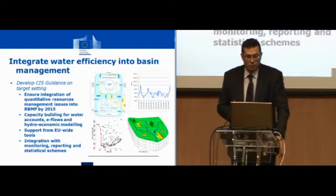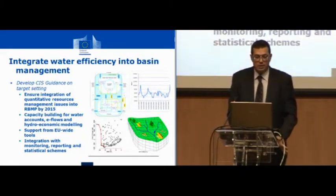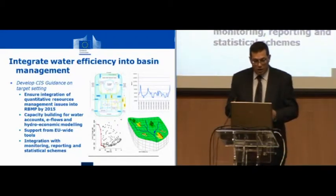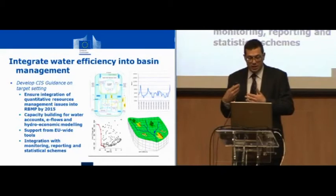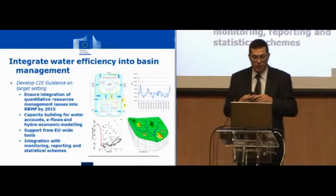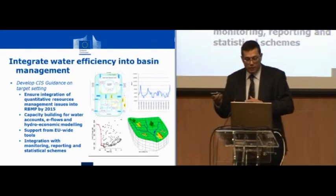The second element of the blueprint with regard to water efficiency is the better integration of water efficiency into river basin management. The tool selected in the context of the blueprint is to develop guidance on water balance, e-flows, and target setting in the context of the common implementation strategy. The objective is to ensure better integration of quantitative resource management issues into the next river basin management plans. This will also be a process for capacity building in the different member states and river basins for water accounting, definition of e-flows, and hydro-economic modeling. We have good examples of practices at river basin level and are building capacity at EU level together with the EEA and the Joint Research Centre.